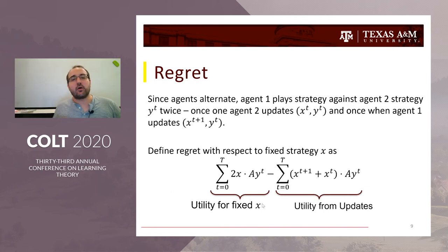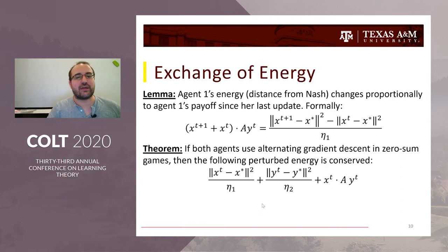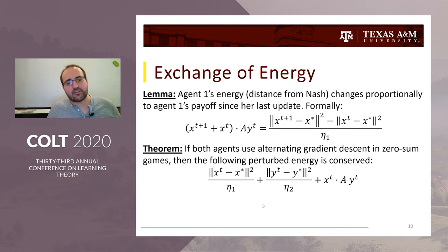Going back to the physics connection: this utility from the updates connects into the physical system really well. It actually describes the change in the distance from Nash equilibrium. We formally show that the total utility you gain when you play against your opponent's strategy twice is exactly how much your distance from Nash equilibrium changes — and that's for general games.